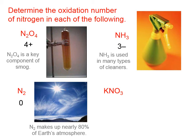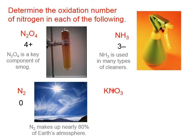In the last compound, there are 3 oxygens each worth 2−, giving a net of 6− from oxygen. The potassium, based on its position on the periodic table, is 1+. So: 1+ plus what, minus 6, equals 0? That would be 5+, so the oxidation number of nitrogen is 5+.